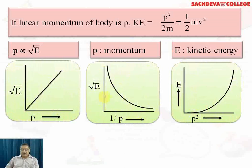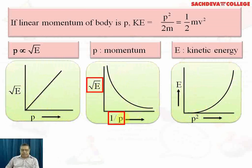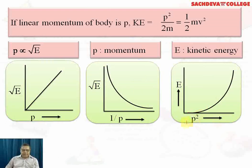Three graphs are shown here: one is √E versus p, another is √E versus 1/p, and the third is E versus p². In the first graph, as √E increases, momentum increases — it is a linear graph. In the second graph, as energy drops, momentum increases — an inverse relation. In the third graph, as p increases, energy increases up to a certain extent and then the graph becomes parallel to the y-axis.